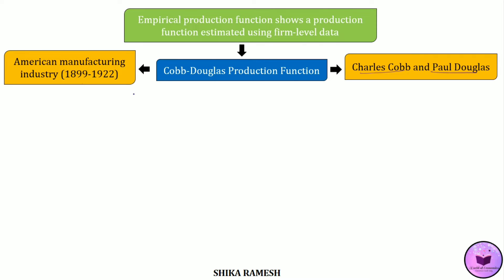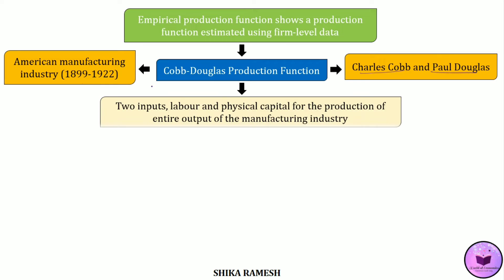They used this production function to consider the relative importance of the two input factors, i.e., labor and physical capital, in the manufacturing output in the USA over the period 1899–1922, i.e., for a period of 23 years.